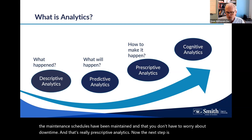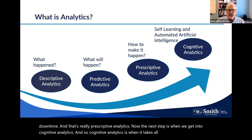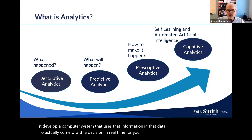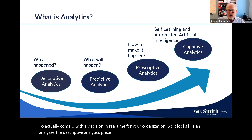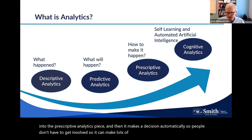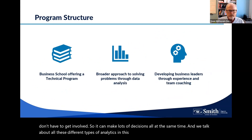The next step is cognitive analytics — when a computer system takes all of this information and data to come up with a decision in real time for your organization. It analyzes the descriptive piece, runs it through models, goes into the prescriptive piece, and then makes a decision automatically — so people don't have to get involved and many decisions can be made simultaneously. We talk about all these different types of analytics in this program.